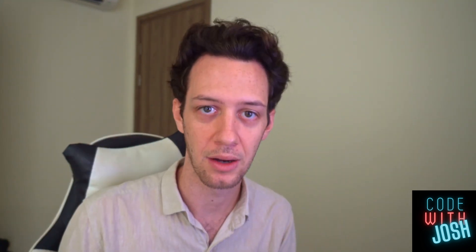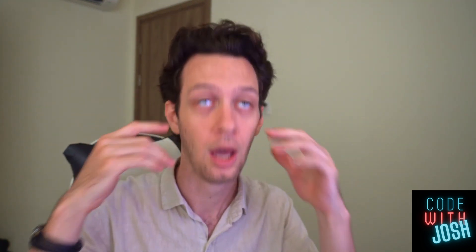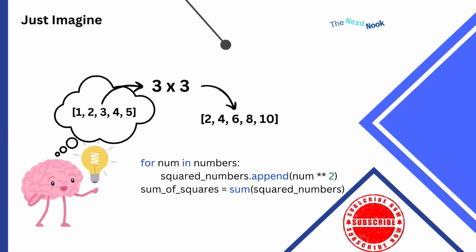How we're visually thinking about it is: I want to go through something, and I want to multiply it by itself. You would be thinking of code that looks like this. If we broke it down to its true basic form — for every number in a list of numbers, I'm going to take a new list and append that current number multiplied by two.